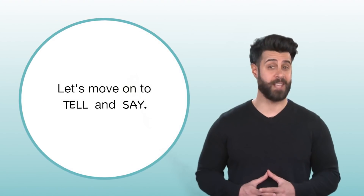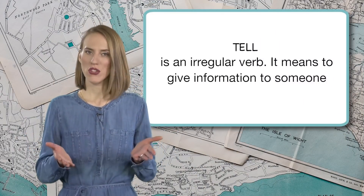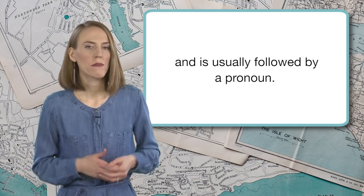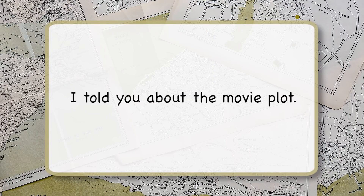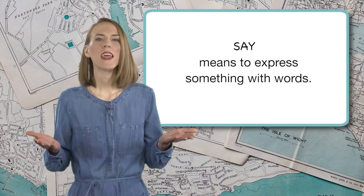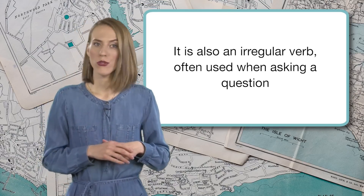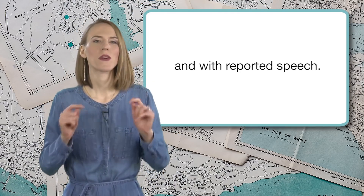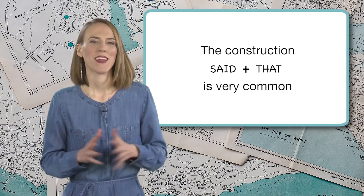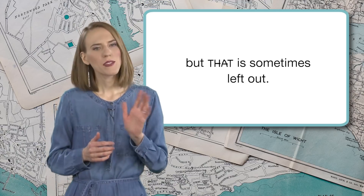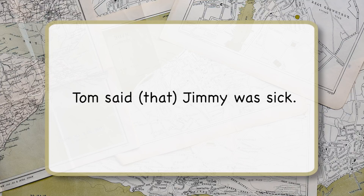Let's move on to tell and say. Tell is an irregular verb. It means to give information to someone and is usually followed by a pronoun. She didn't tell me her sister was in town. I told you about the movie plot. Say means to express something with words. It is also an irregular verb, often used when asking a question and with reported speech. The construction said plus that is very common, but that is sometimes left out. What did Sally say? Tom said Jimmy was sick.